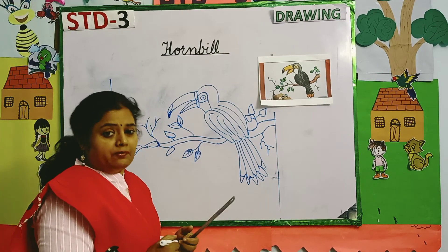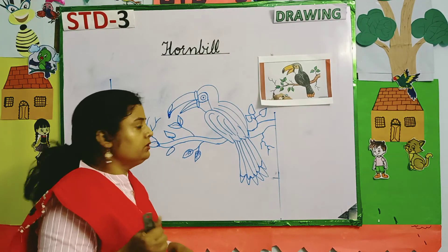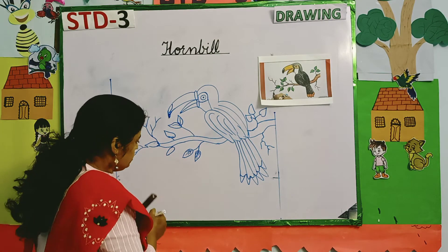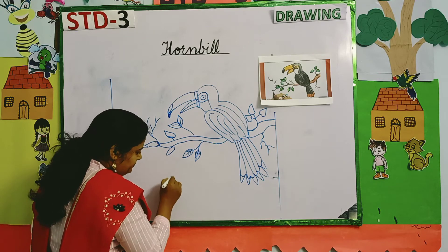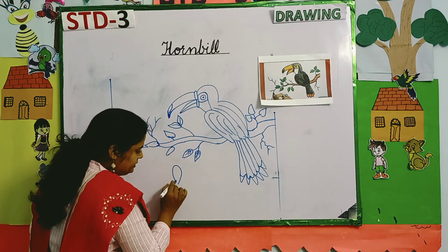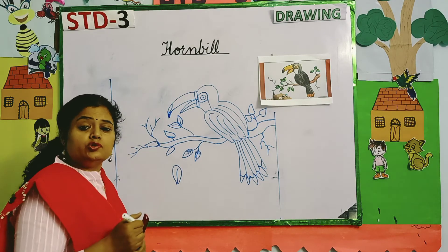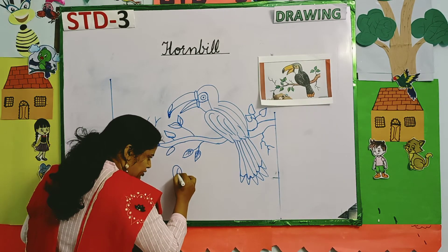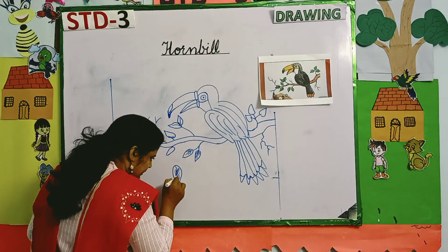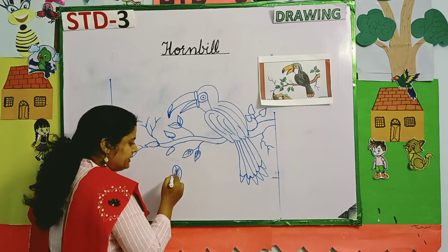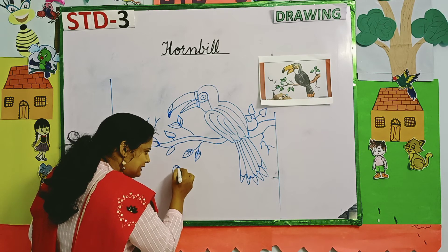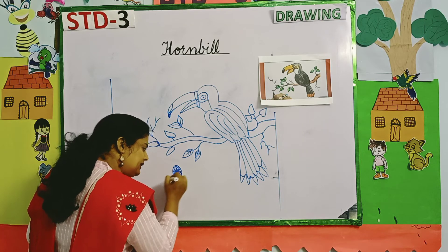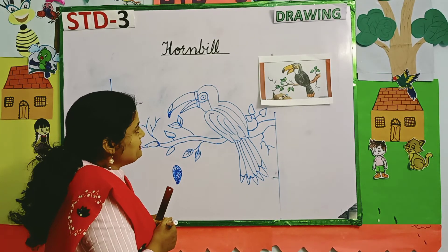Now, one very important thing I want to tell you regarding coloring. Suppose this is a leaf — how are you supposed to color it? This area should be dark green first, then color it with light green. Then you will see a shaded effect will appear.